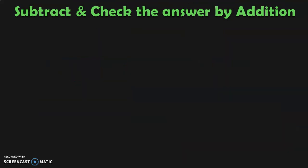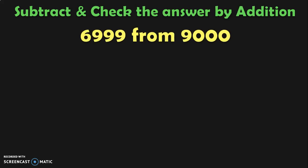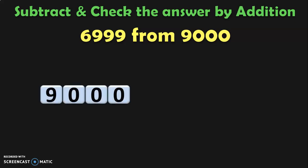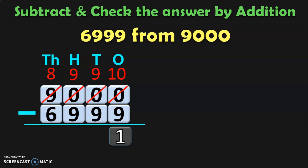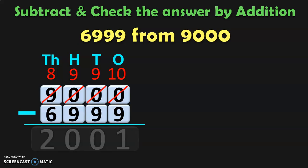Subtract and check the answer by addition: 6999 from 9000. Here we have zeros in the number from which we are subtracting, so it's going to be interesting. In the 1s, 10s, and 100s place we have zeros — we cannot borrow from them. So move to the 1000s place, which has 9000. Regrouping: 8000s plus 10 hundreds, then 9 hundreds and 10 tens, then 9 tens and 10 ones. 10 minus 9 in the 1s place is 1. In the 10s place, 9 minus 9 is 0. In the 100s place, 9 minus 9 is 0. In the 1000s place, 8 minus 6 is 2. So the difference is 2001.